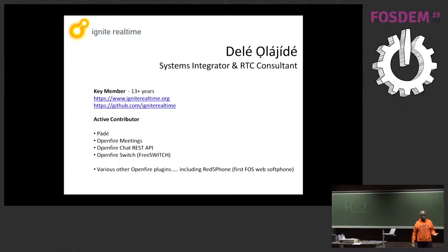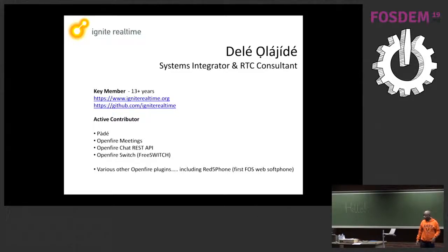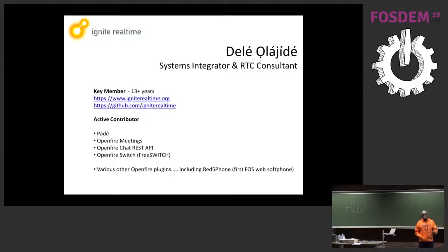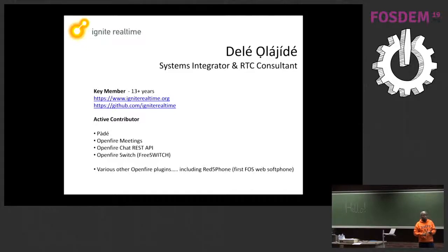Basically, it's a unified communications client. Why is it unified communications? It combines not just XMPP — it combines SIP as well as XMPP, and even adds in email. Our main projects at Ignite Real Time are OpenFire, which is an XMPP server; SMACK, the XMPP client API; and then Spark, the XMPP desktop client, which was built with SMACK.